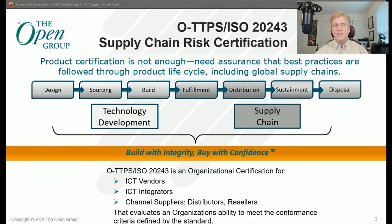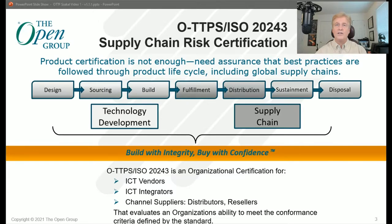The Open Trusted Technology Provider Standard defines industry best practices for mitigating supply chain risk across the technology product lifecycle — from inception through development into sustainment and finally disposal or deprecation. OTTPS is also known as ISO IEC 20243, or just ISO 20243, an international standard. The certification program is an organizational assessment against the controls to mitigate supply chain risks across the manufacturing, development, and distribution lifecycle.